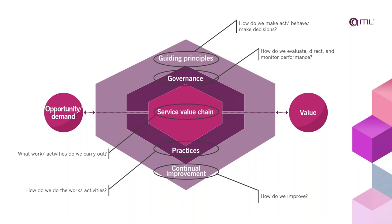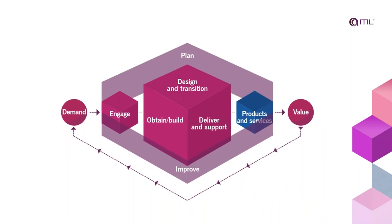The service value chain — that central part of the diagram — is not an organizational model; it's an operating model. It describes six archetypal activities that any service provider, regardless of size, industry, or location, will undertake at some point. For example, at some point you will be engaging with external stakeholders, planning your work, buying or building service components, and delivering and supporting live services.